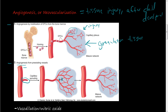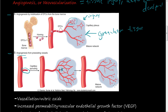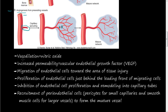This picture is from Robbins Basic Pathology, 8th edition, Kumar is the author. So what are the steps of angiogenesis or neovascularization? First, it's vasodilation, and that is caused by nitric oxide.